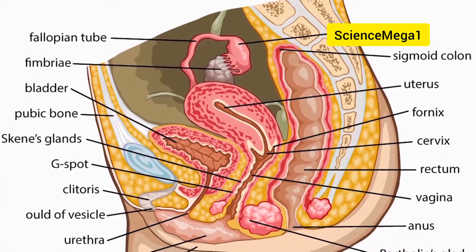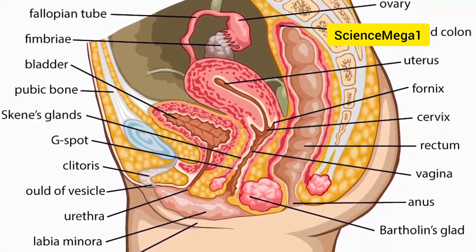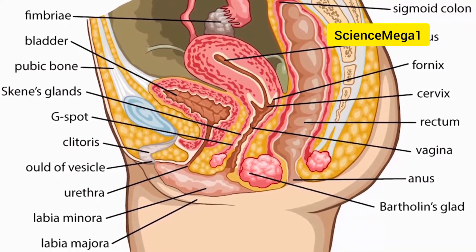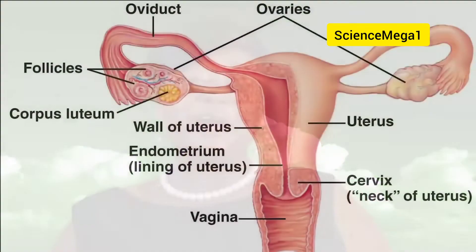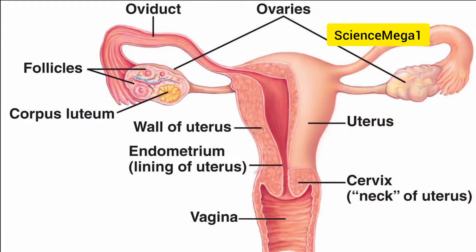Now take a look at the female reproductive system rolling on the screen. Is this similar to those you found in the previous lesson? You're right — there are no similarities at all. The organs and functions of female reproduction are very different compared to the male reproduction. Yet they are so complementary that neither can complete the process of reproduction without the other. Now let us take a careful look at the diagram showing on the screen. Every part of the female reproductive feature has a specialized function, just as with the male reproductive features.